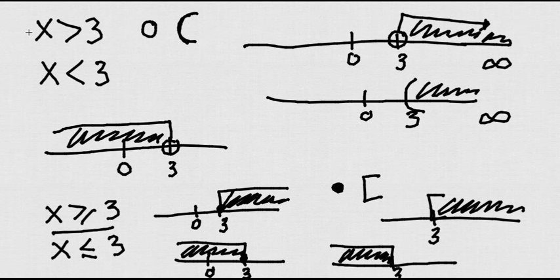So let's recap. When you have greater than or less than, you just put an open circle or a parenthesis. But when you have greater than or equal or less than or equal, you're going to either use a dot or a bracket. Now let's go ahead and learn how to write this into interval notation.